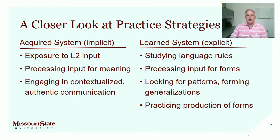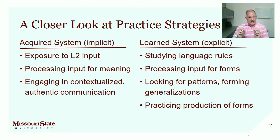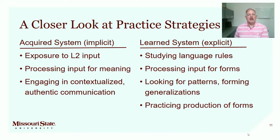If you were targeting your learned system — as we often will be in this class — we're going to study language rules. We might read something, but we're paying attention and looking for specific forms. For example: 'While I'm reading this, I'm really going to try to see how they use the imperfect versus the preterite,' or circling verb endings and prepositions. We're processing input primarily for forms rather than meaning — looking for patterns, forming generalizations, connecting those to rules or making new rules in our minds, then practicing the production of forms. Almost everything that we do in the textbook — those actividades de análisis y de práctica — they contribute to our explicit knowledge, our learned system.